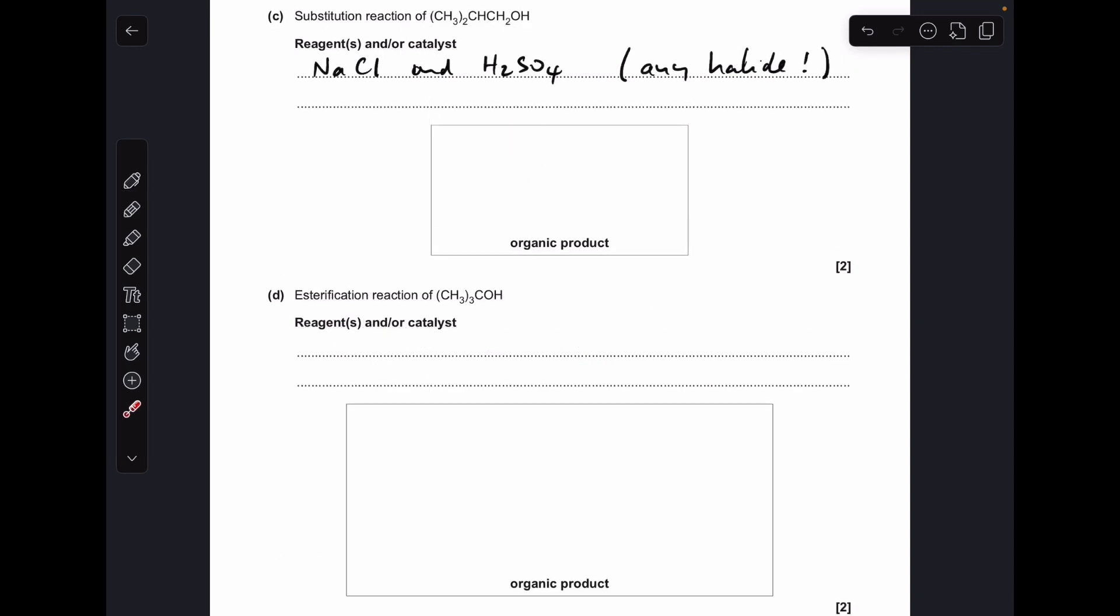Part C, substitution reaction of alcohol. I've gone for sodium chloride and sulfuric acid, but you'll see I've written up there any halide, so that could be sodium fluoride, sodium bromide, sodium iodide, etc. But because I've gone for chloride, that's the organic product I would have to give.